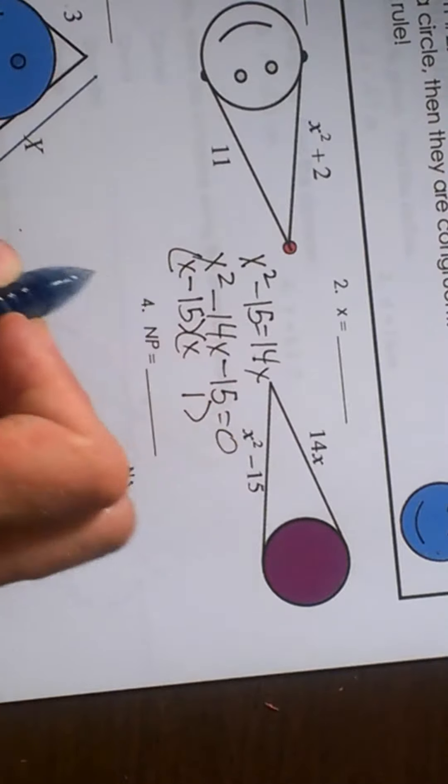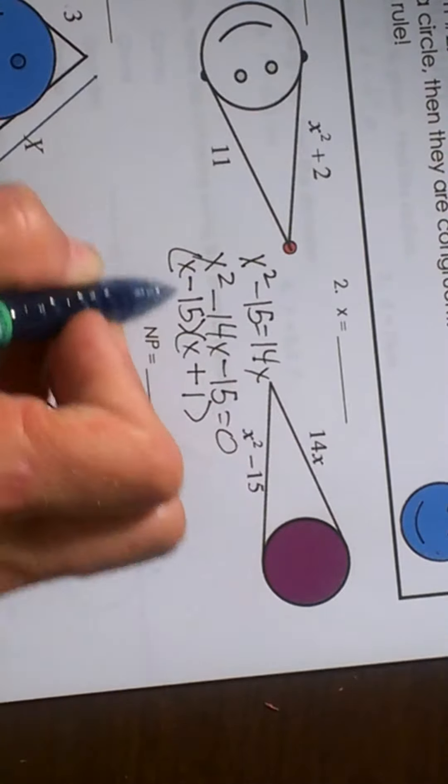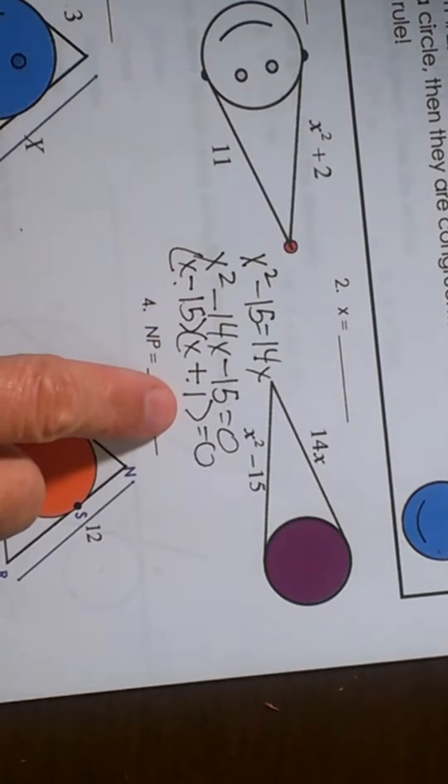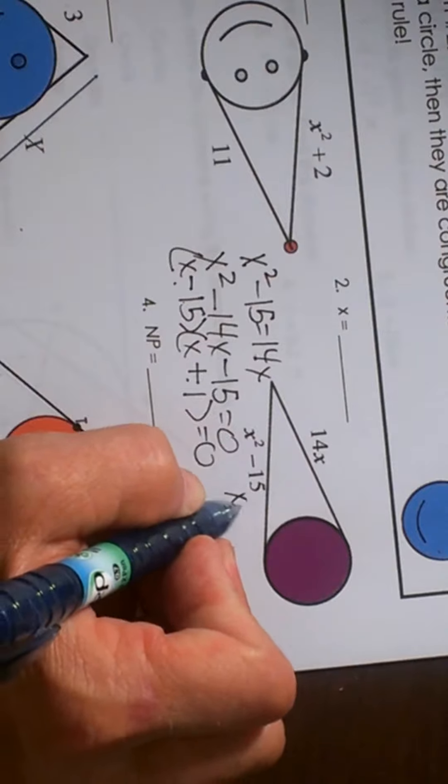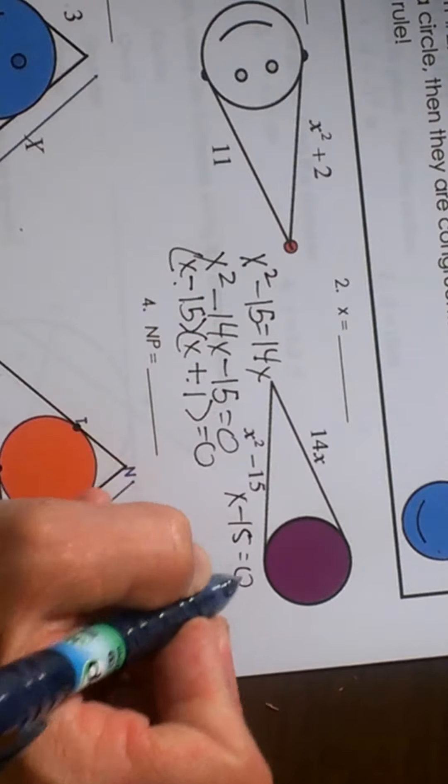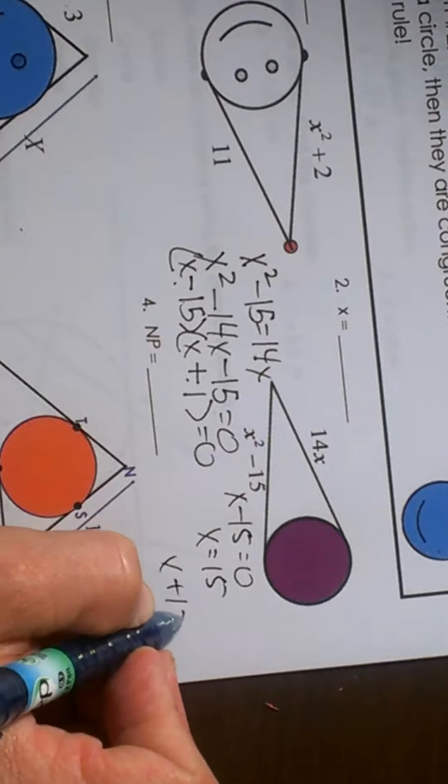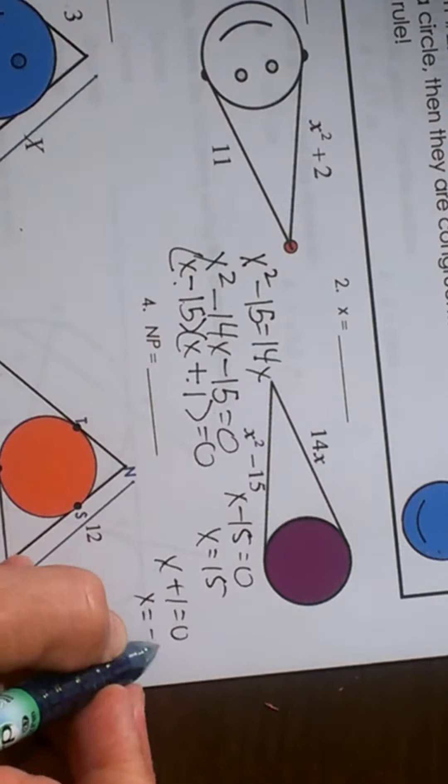So let's see, I want a negative 15 and a positive 1 because that gives me a negative 14 equals 0. To solve this quadratic my answer would be x minus 15 equals 0, so x is 15, or x plus 1 equals 0, so x is negative 1.